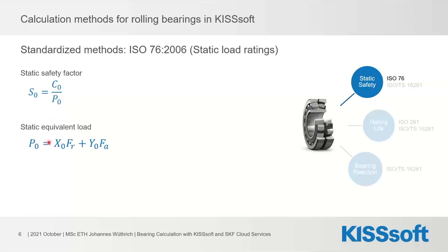The equivalent static load is calculated from the radial force and axial force on the bearing using X and Y factors, which are tabulated in the standard and in catalogs. In KISSsoft these factors are directly integrated — they are automatically read from the database, so you never have to enter them manually.